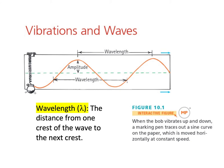Since an amplitude is a distance, it's usually going to have units like meters or feet or some other kind of distance unit. The next thing we want to talk about is the wavelength. The wavelength is the distance from one crest of the wave to the next crest. The crest is the maximum height, and if I go all the way over to the next time the maximum height occurs, that distance is the wavelength.